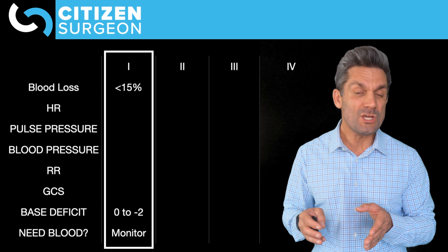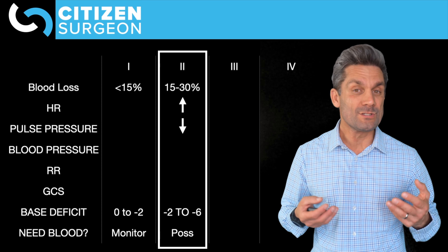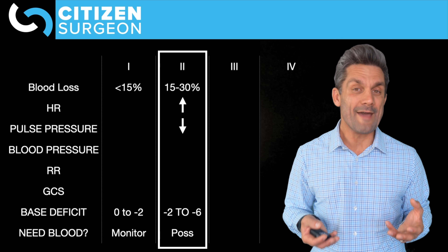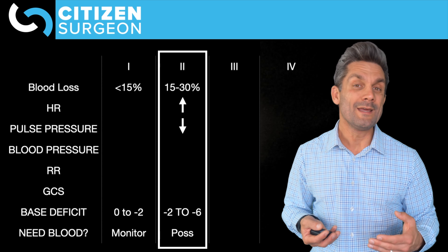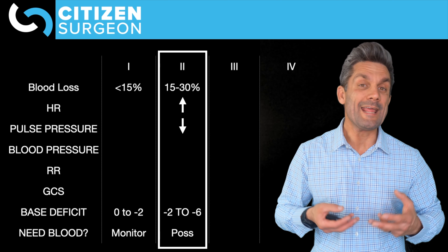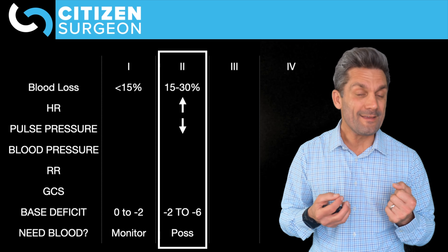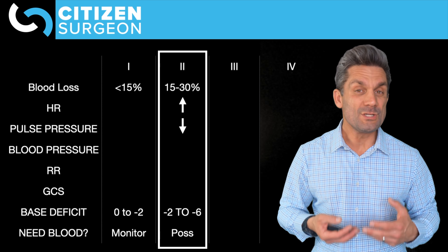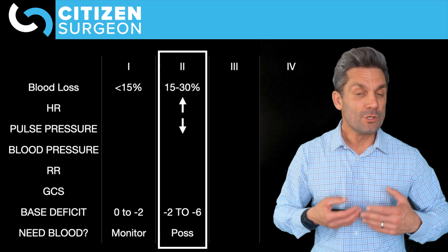Stage 2 shock is up to 30% blood loss — about one and a half liters. Now things start to happen. The patient becomes tachycardic — heart rate over 100 in an adult. You'll see a narrowed pulse pressure as that diastolic pressure rises from venous system compression. Interestingly, up to 30% blood loss you can still have normal blood pressure, normal respiratory rate, and normal GCS.